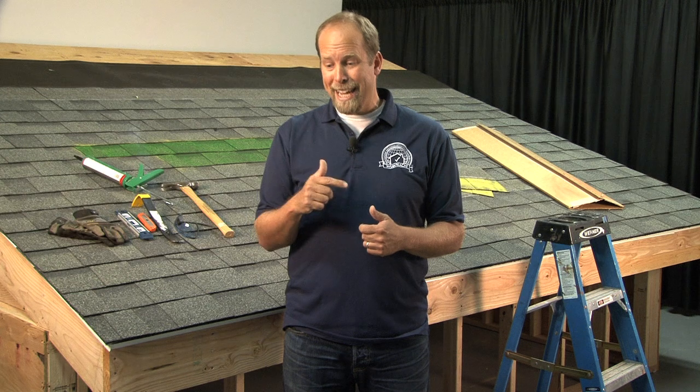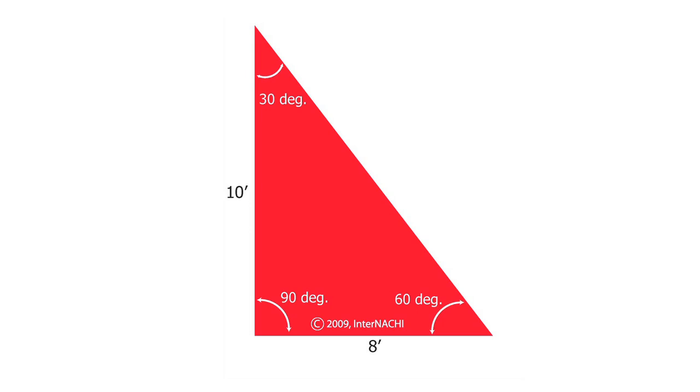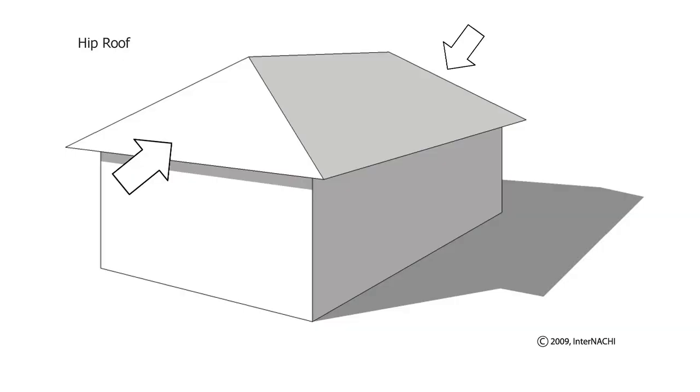Now let's look at calculating the area of a triangle. The area of a triangle, regardless of the triangle shape, is base times height times one half. In this example, the area of the triangle is eight feet times ten feet times one half, which equals forty square feet. The four planes of a hip roof include two triangles and two trapezoids. Calculate the area of each shape and add them all together to get the total square footage of the hip roof area.